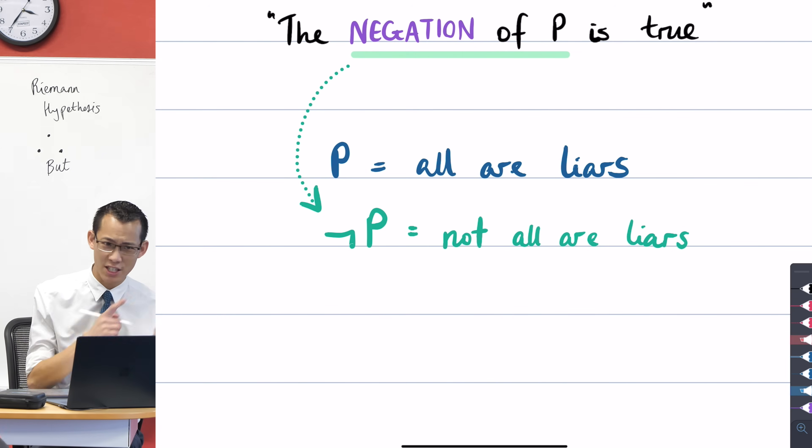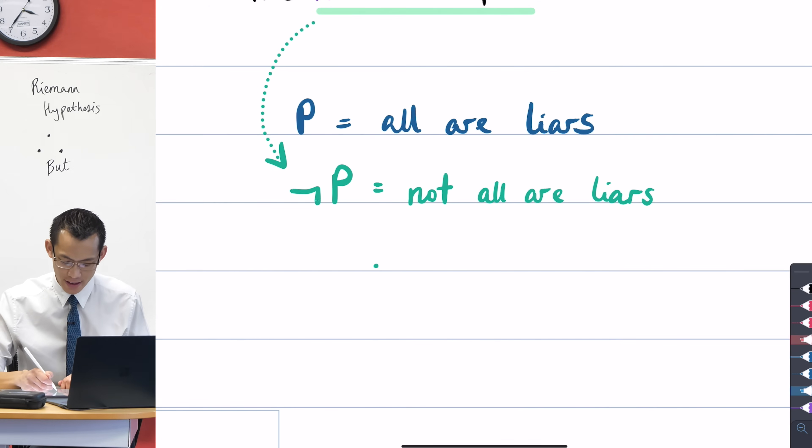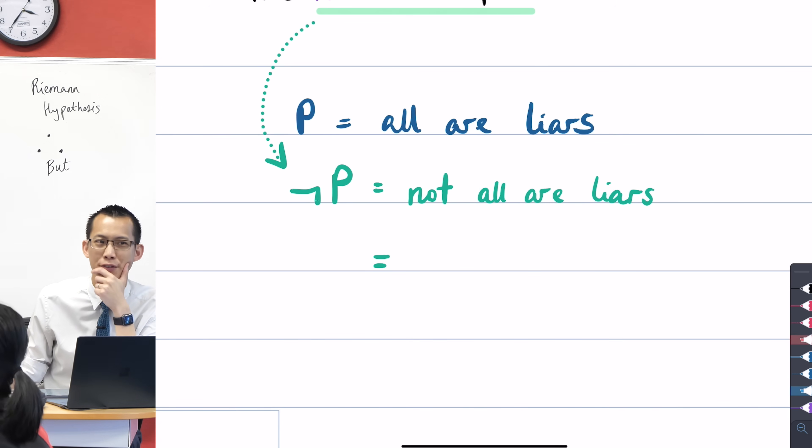So the easiest way to say the negation of P is to put a not in front, and then just say the statement. So if P is that all are liars, then the negation of P is that not all are liars.